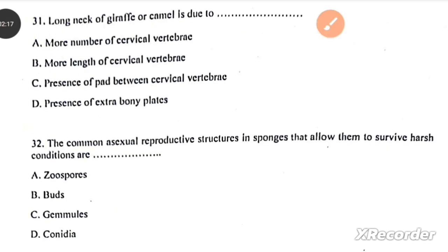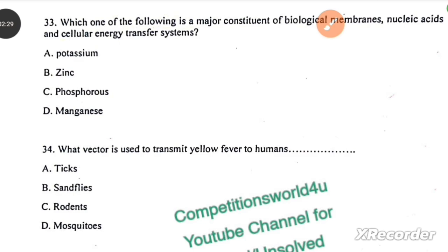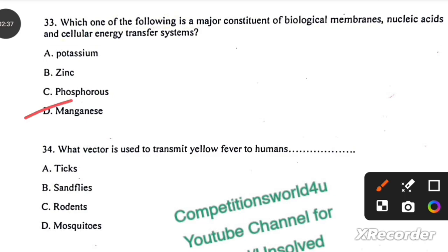Long neck of giraffe or camel is due to the more length of cervical vertebrae. The common asexual reproductive structures in sponges that allow them to survive harsh conditions are gemules. Which of the following is a major constant of the biological membranes, nucleic acid and cellular energy transfer systems? Manganese.